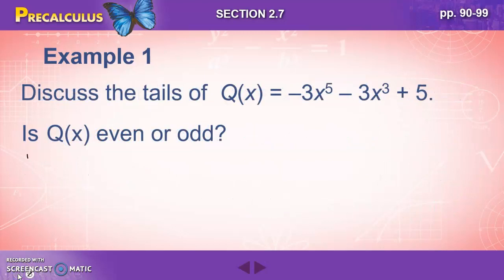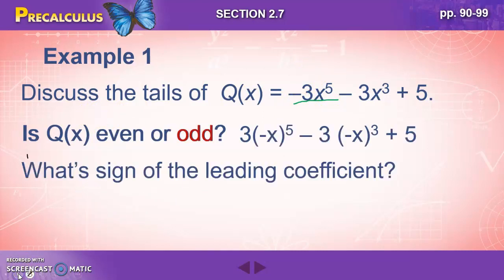All right. Discuss the tails of this function. Negative 3x to the fifth minus 3x to the third plus five. Is q(x) even or odd? What's our degree? Our highest degree is five, which is odd. And our leading coefficient. Here we say positive. It is a positive 3. Although in our original one, it had a negative 3. So that's a typo there I need to fix.